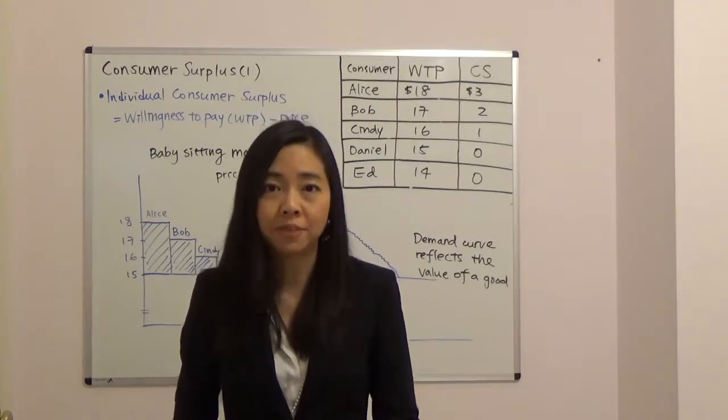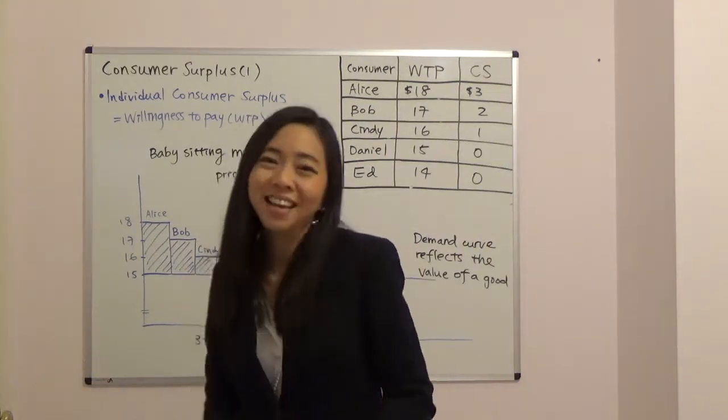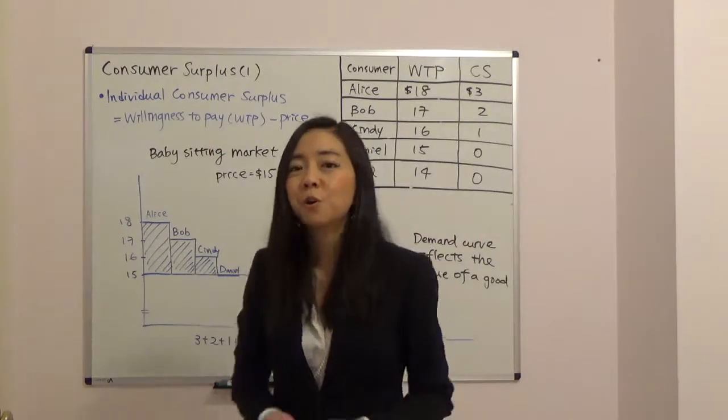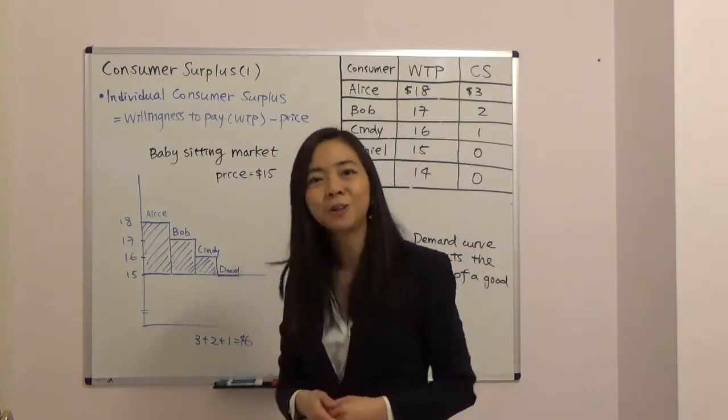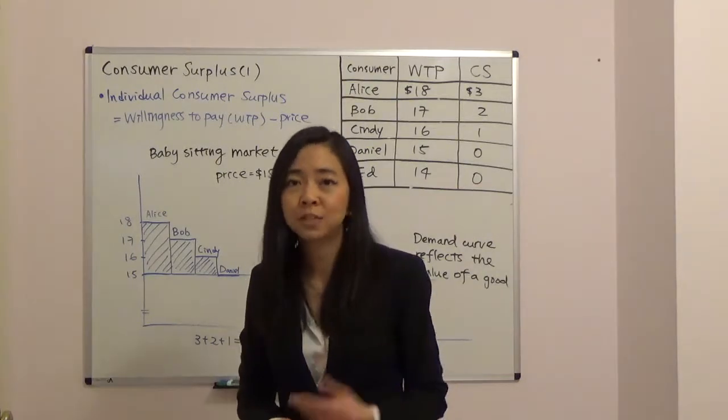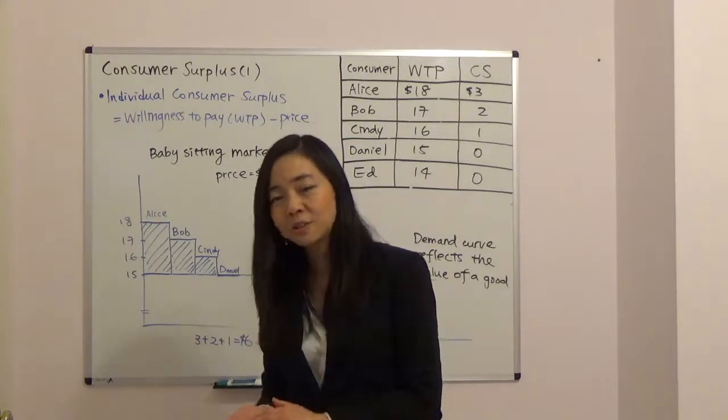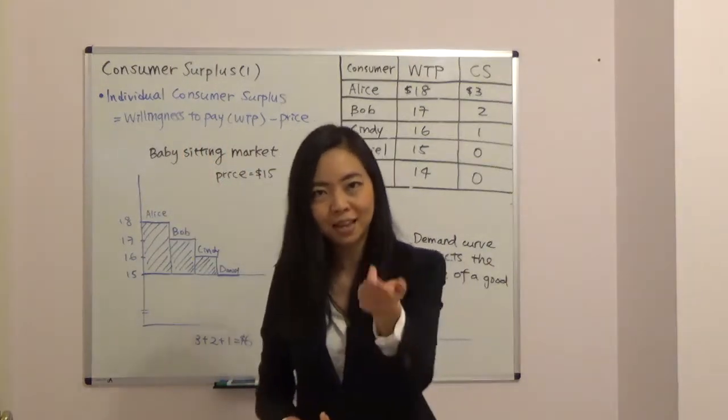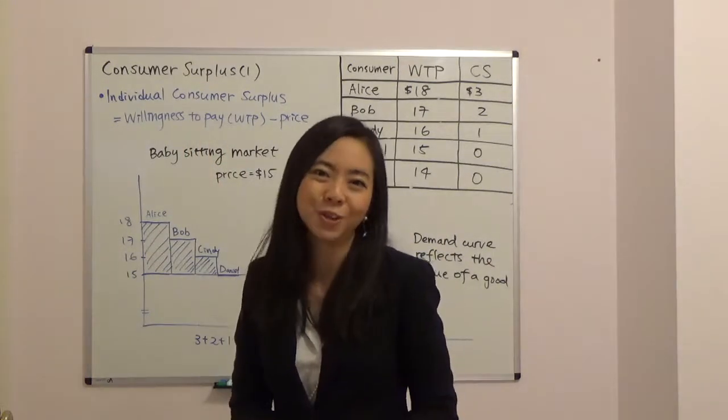I would not pay more than one thousand two hundred dollars for that computer. Then your willingness to pay for that computer will be one thousand two hundred dollars, whereas the price is a thousand dollars. Therefore your consumer surplus for that computer is one thousand two hundred minus one thousand, that gives you two hundred. So your consumer surplus for that computer you're using will be two hundred dollars.